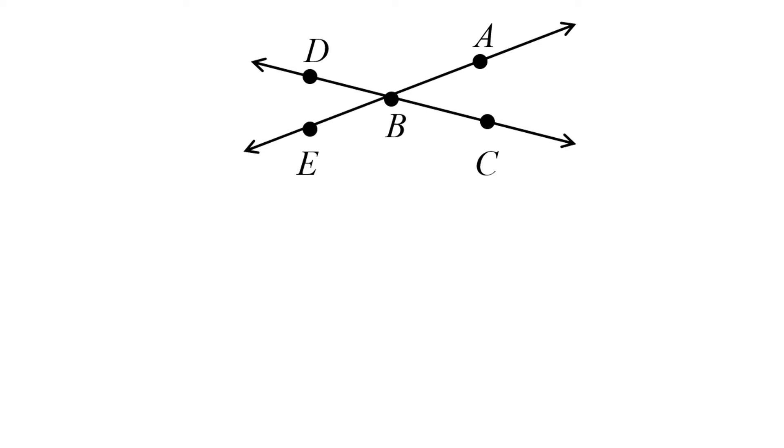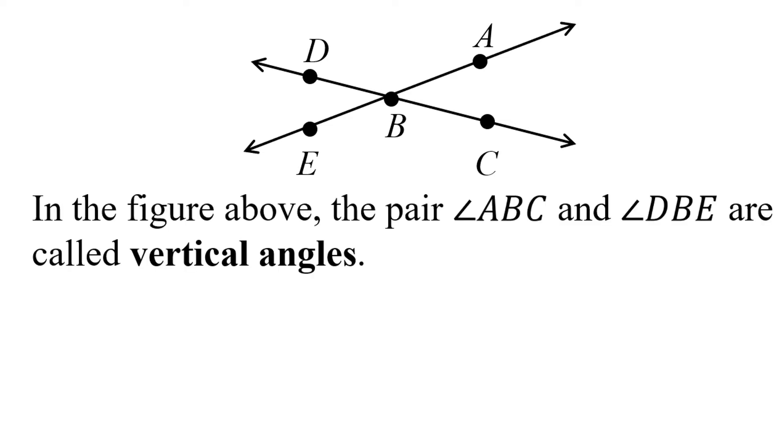But when two lines meet, they don't always meet at 90 degree angles. This doesn't mean we don't have information about the size of the angles. For example, in this diagram, the pair of angles ABC and angle DBE are called vertical angles because they're directly across the same vertex from one another.